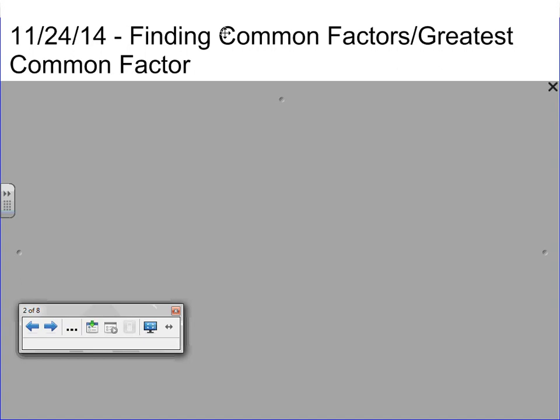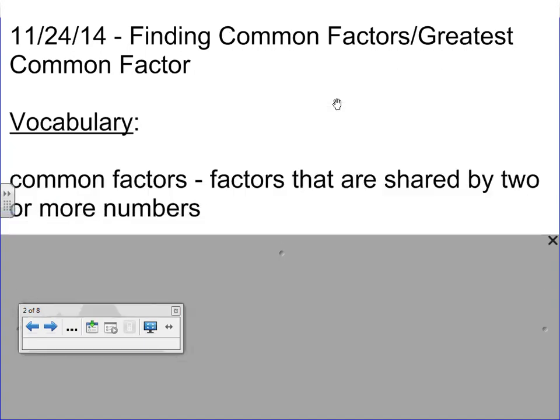Before we start we want to hit on a few vocabulary terms here. The first vocabulary term would be common factors. So these are factors that are shared by two or more numbers.